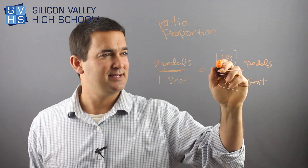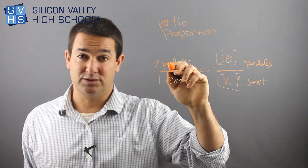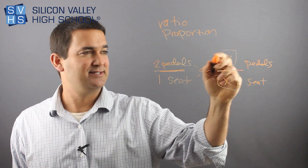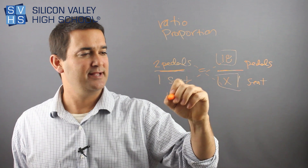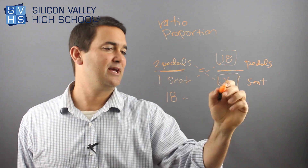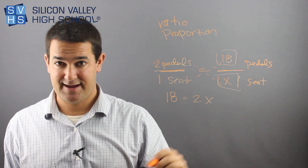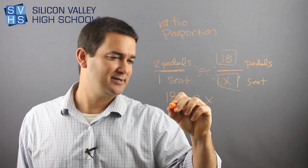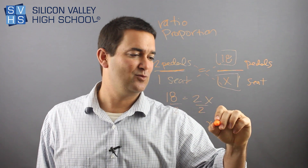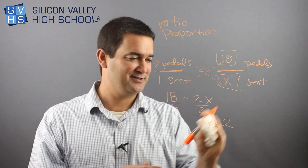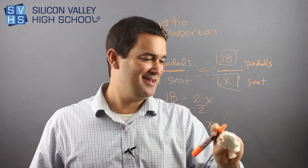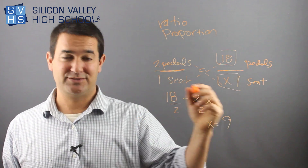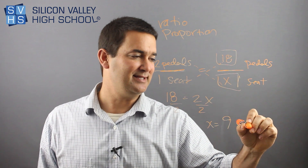Cross multiplying means him times him equals him times him. So forget the units — in this case, 18 times 1 equals 18, and that equals 2X. Then just solve. Do your algebra: divide both sides by 2. 18 divided by 2 is 9. The answer is 9. Remember, I was looking for seats, so the answer is 9 seats.